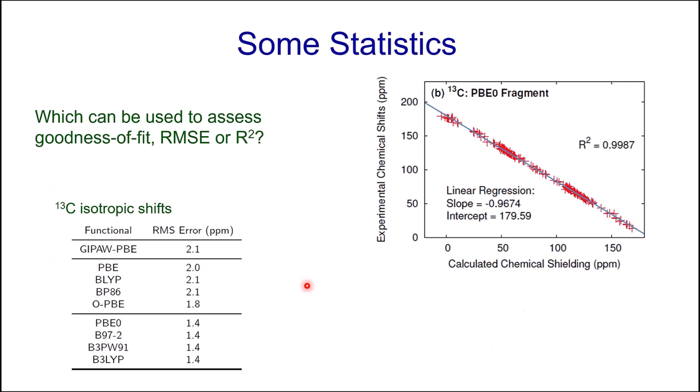Regarding accuracy of chemical shifts, let's have a little quiz. On this slide there are two common types of statistics: root mean square error and R-squared, the Pearson correlation coefficient. Which can be used to assess goodness of fit? If you were paying attention to my earlier side comments, or if I've been a reviewer on one of your articles, you'll know the answer: root mean square error.